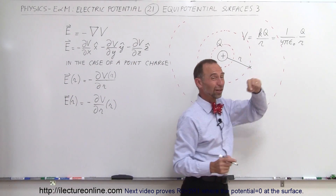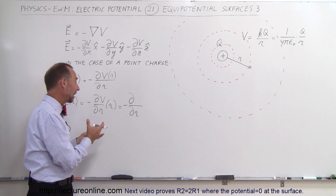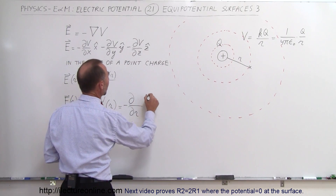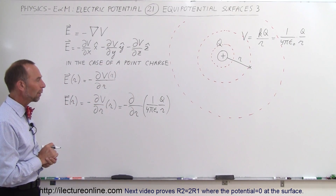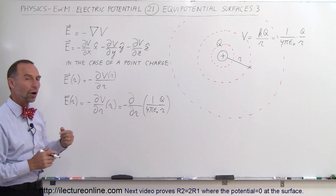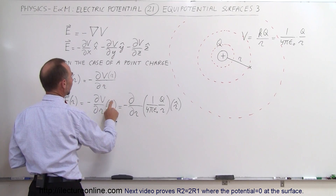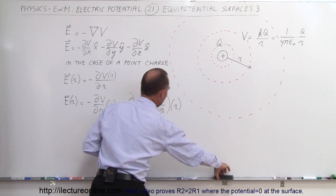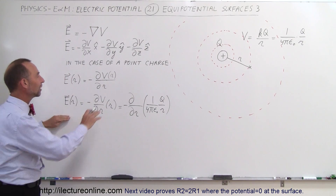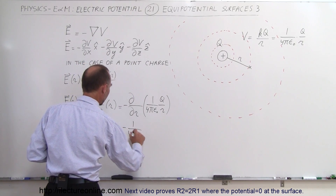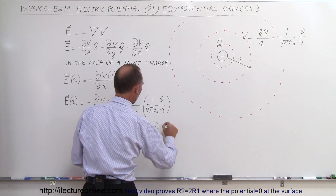We know the potential is defined by V = Q/(4πε₀r), so let's plug that in. This becomes the negative derivative with respect to r — really the partial derivative, but with only one variable we treat it as a regular derivative — of (1/(4πε₀)) × (Q/r). We take the constant out and rewrite 1/r as r^(−1), giving us the negative derivative of (Q/(4πε₀)) × r^(−1).